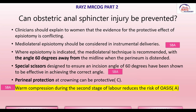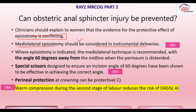Regarding prevention: the clinician should explain to the woman that evidence for the protective effect of episiotomy is conflicting. Prophylactic episiotomy is not always going to prevent obstetric anal sphincter injury. However, if the patient previously had an obstetric anal sphincter injury and her subsequent delivery is by instruments, then a mediolateral episiotomy should be considered. Whenever episiotomy is given, it is very important that the angle should be 60 degrees away from the midline when the perineum is distended.